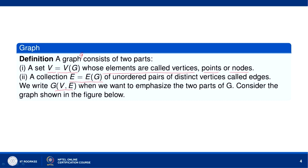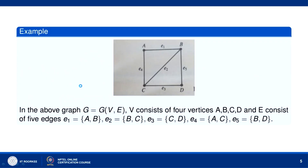Let us consider the graph shown in this figure. There are four vertices: A, B, C, and D. These are joined by edges: E1 is AB, E2 is BC, E3 is AC, E4 is AC, and E5. So there are four vertices ABCD and E, the set of edges, consists of five edges: E1, E2, E3, E4, E5.